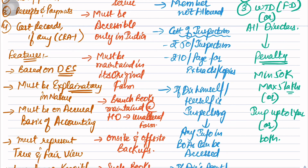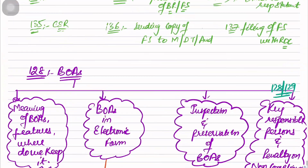But who are the key responsible persons? Managing Director, CFO, and whole time director of the finance department - or else, all directors. That brings an end to Section 128 on Books of Accounts.